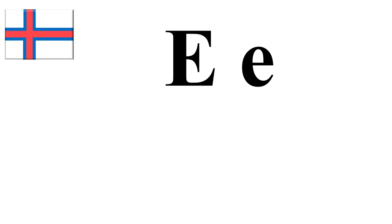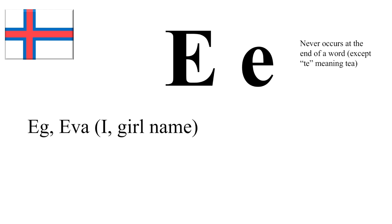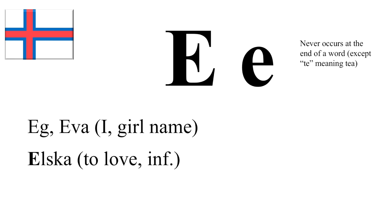Then we have E. E never occurs at the end of a word, except the word T, which means T. So E — Eva. And then we have this again: Älska — the short Faroese E — Älska.